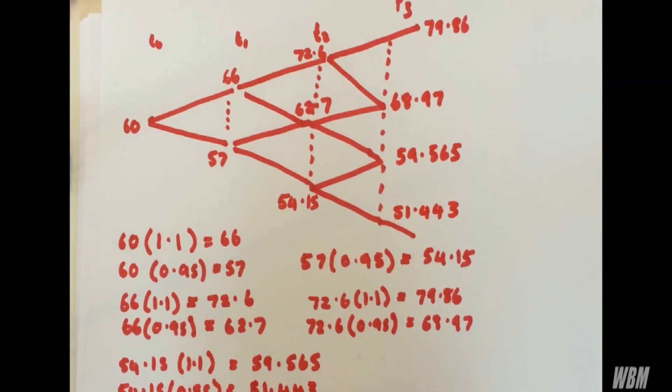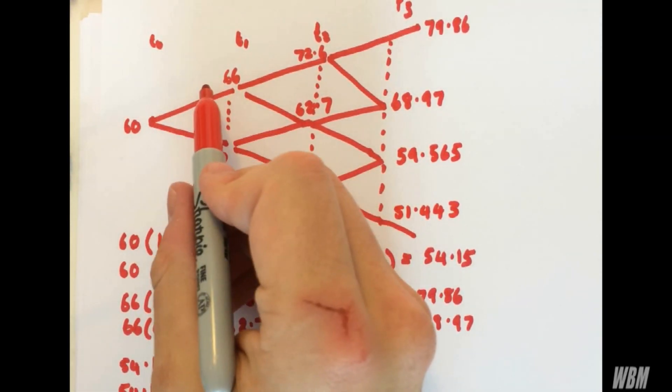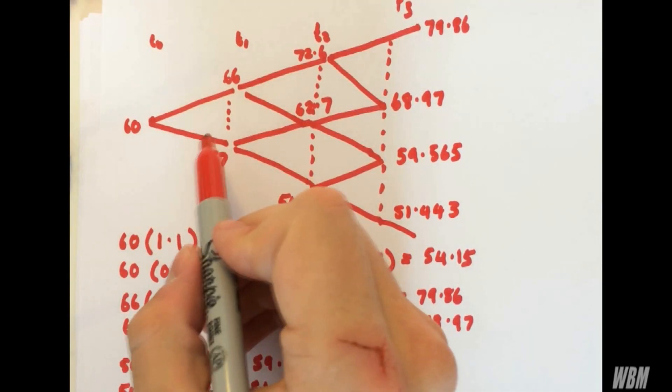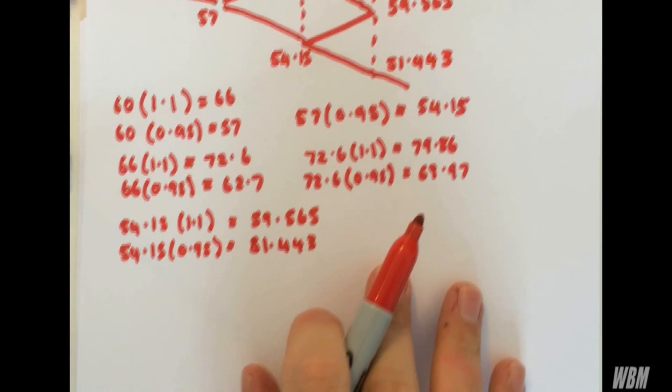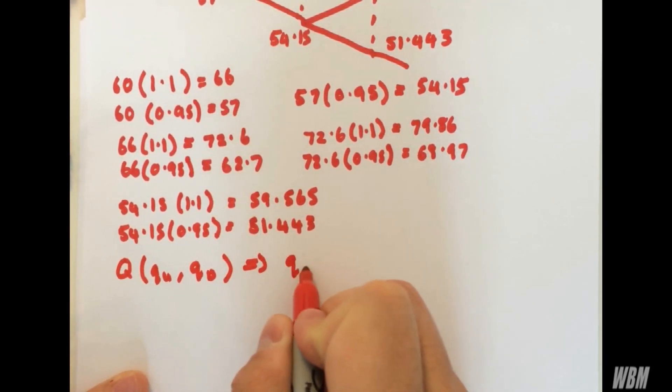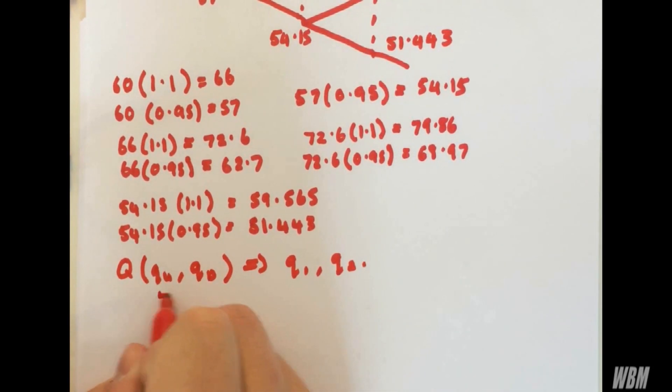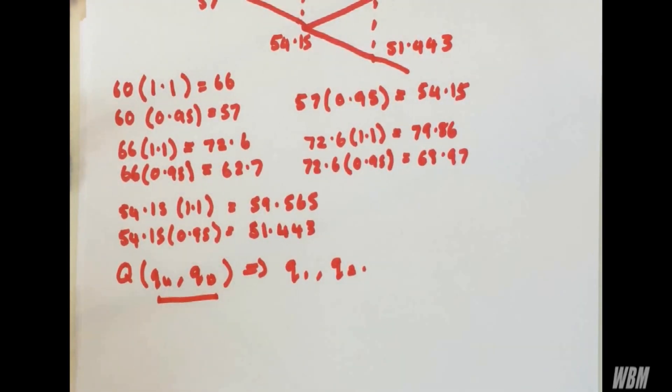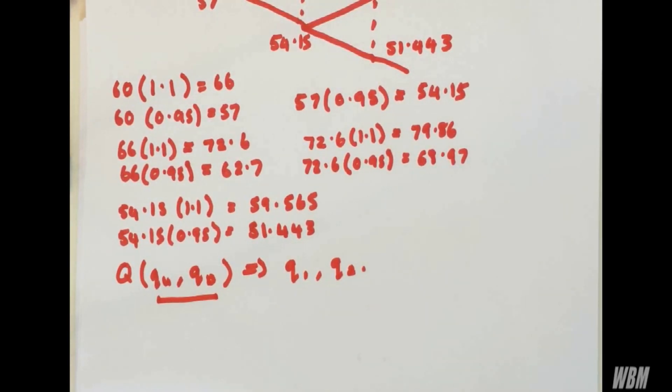So now we've calculated our binomial tree. We want to find the probability that we go up and the probability that we go down. Now these are our risk-neutral measures, or our risk-neutral probabilities. And they're denoted by q, q up, q down. Alternatively, you may see them as q1 or q2. But I like to use q up and q down.